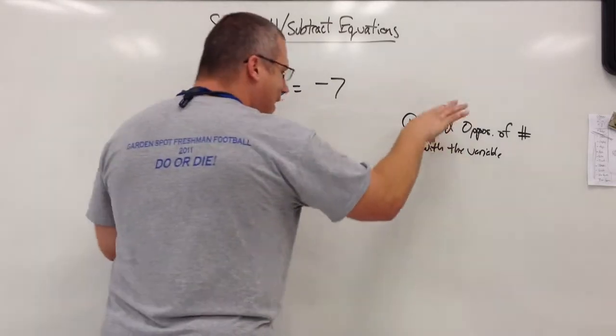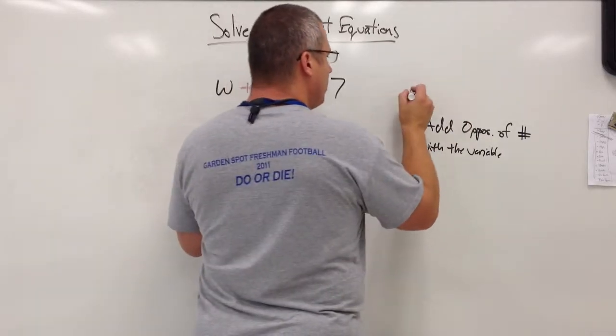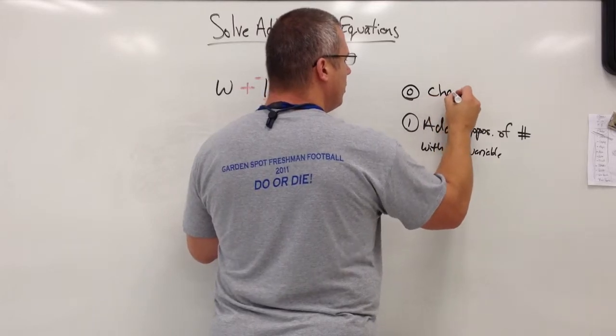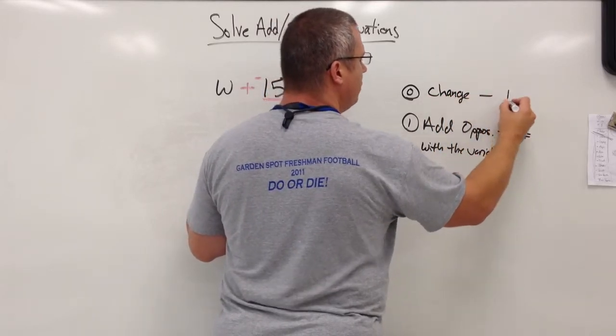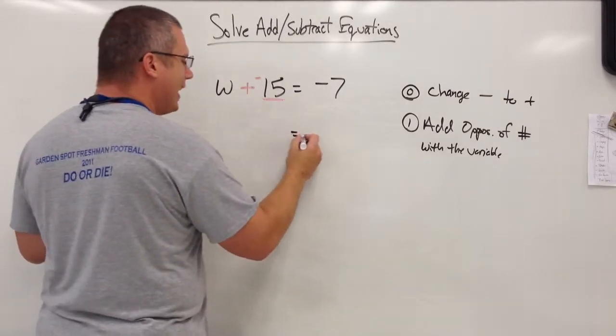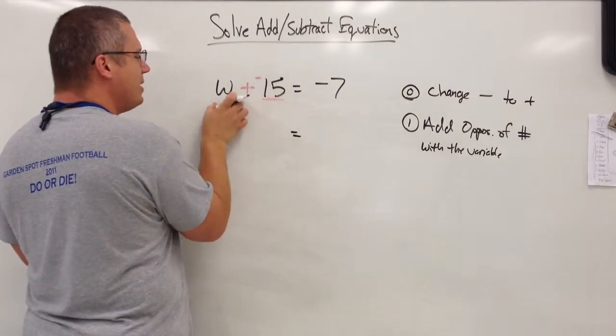So before I do any of this, step 0. 0 would come before 1. I must change all subtraction to addition. Okay, now I'm ready to get rid of the number that is beside the variable.